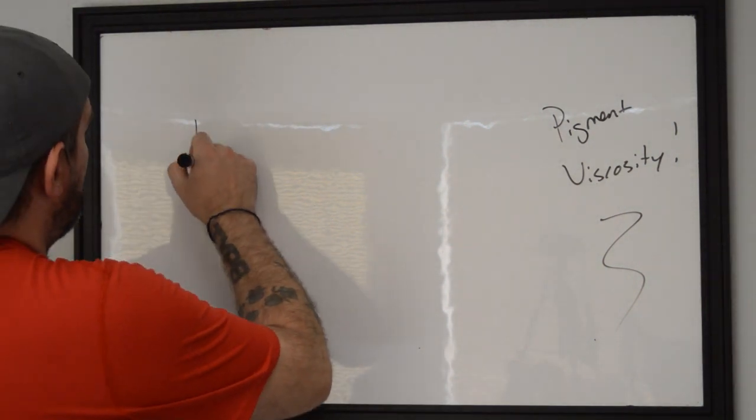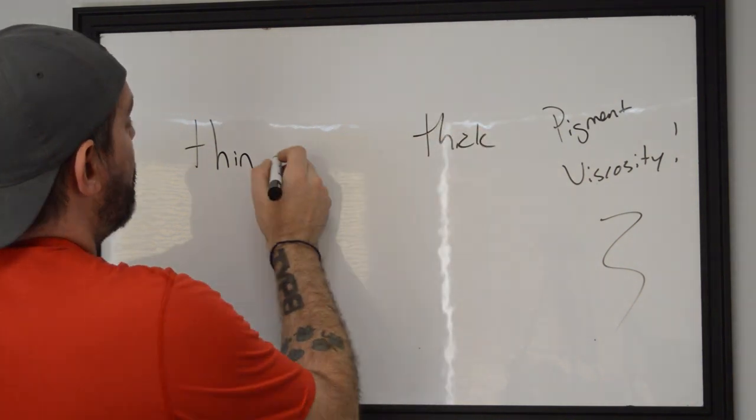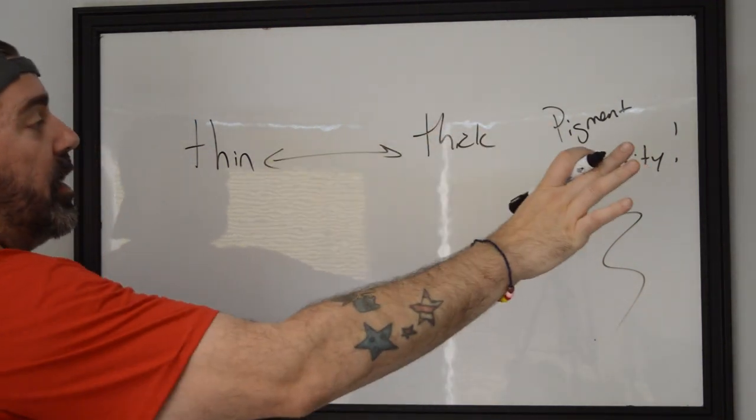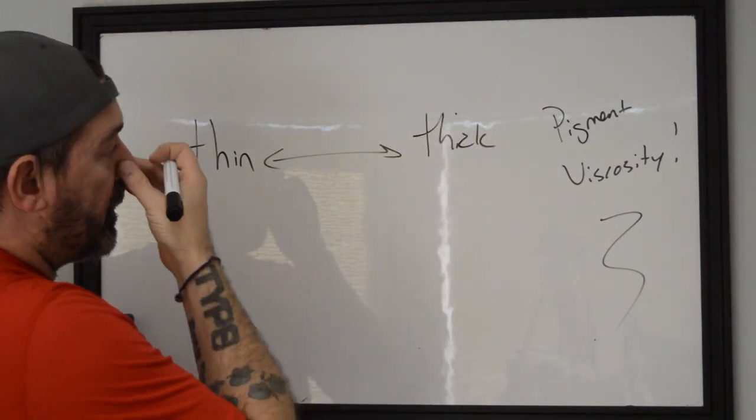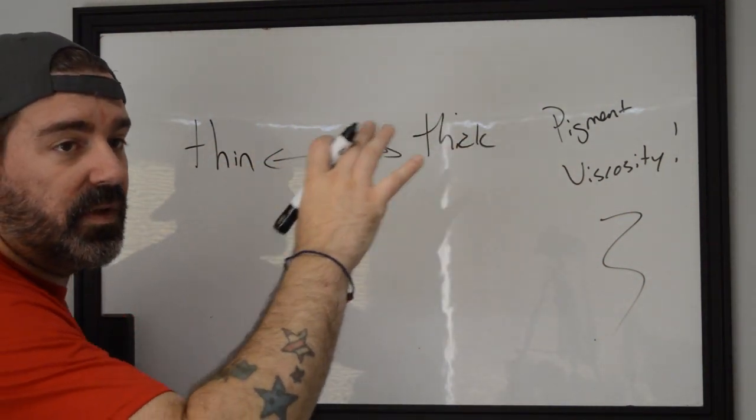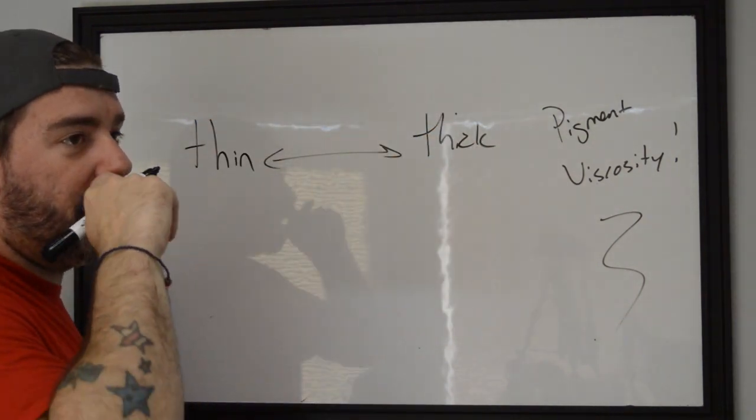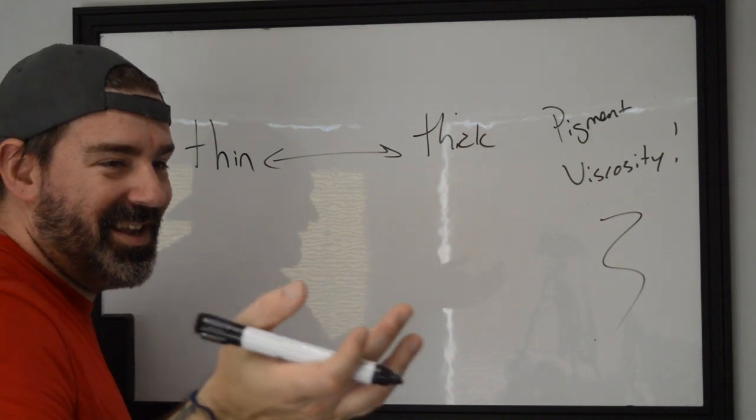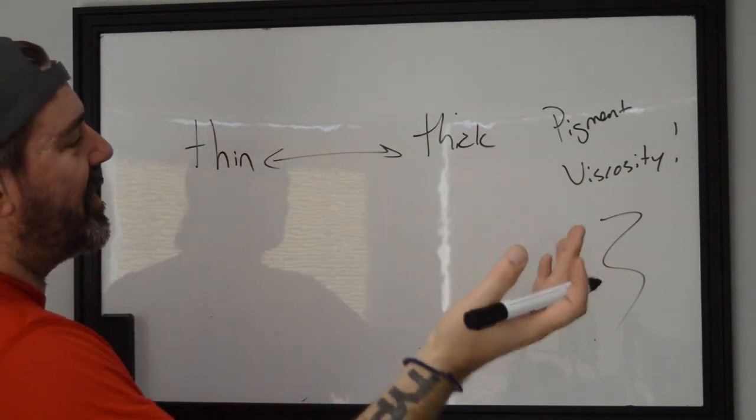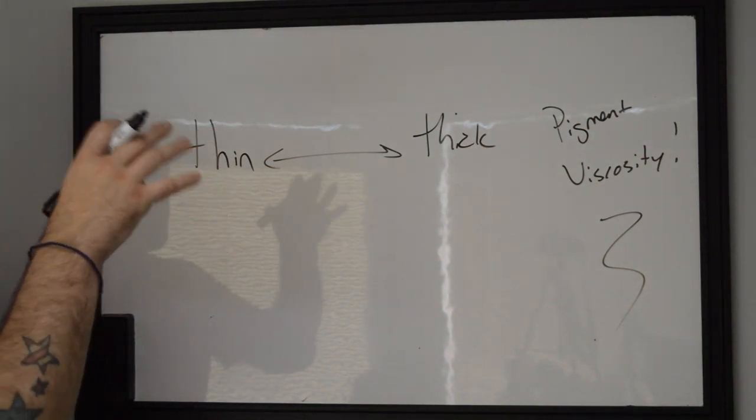So what we're going to do here is think about our thin and our thick pigments on a linear graph. As we start thinking about how these things go, we don't have to really modify our pigments too much unless we start getting to extremes. We're not going to be talking about outliers today, but there's only a few things that we need to think about when we're doing this.